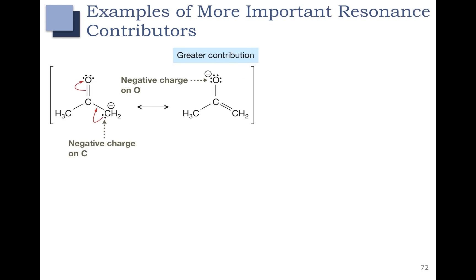In this first example we have a negative charge on a carbon in the left resonance structure and a negative charge on the oxygen in the right resonance structure. To make sure everyone understands what's going on in terms of electrons, I'm going to highlight the lone pair in red — that becomes the double bond in red — and the double bond on the oxygen becomes that blue lone pair.